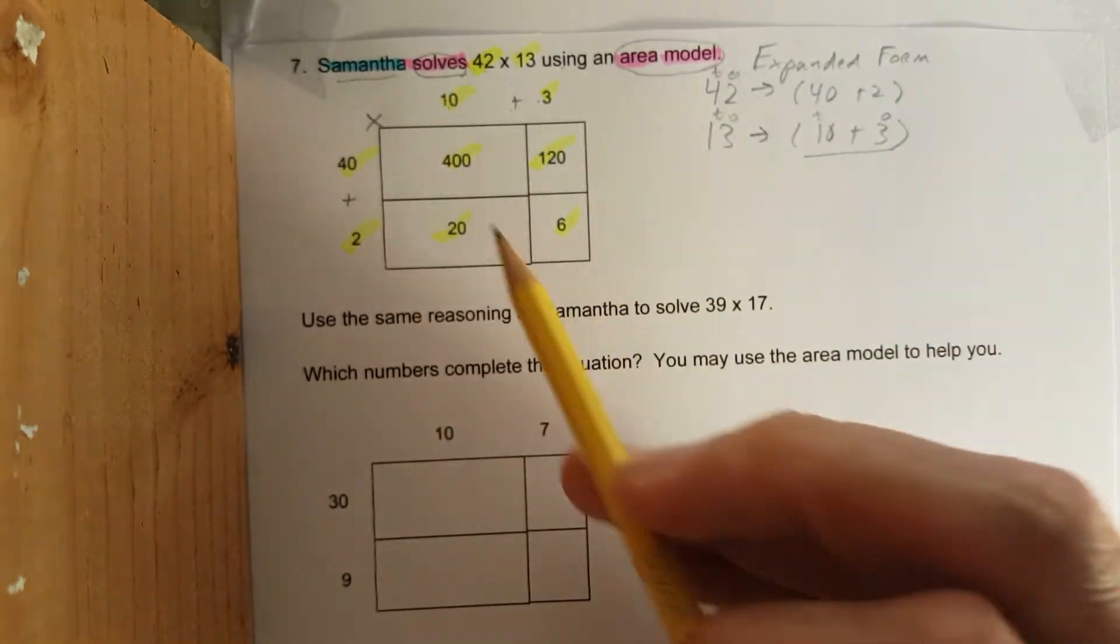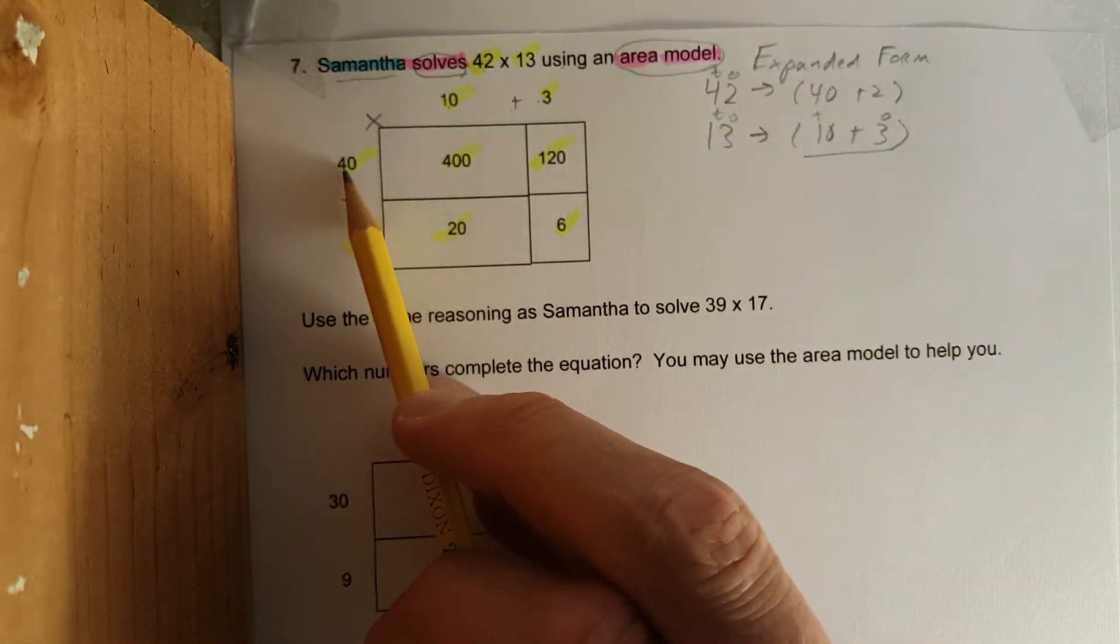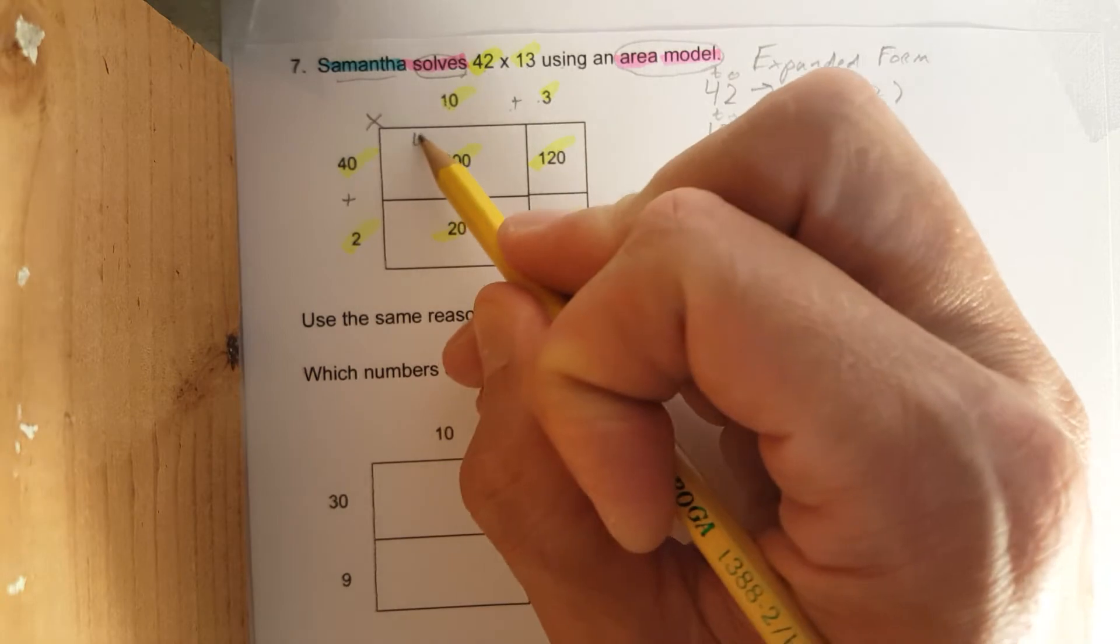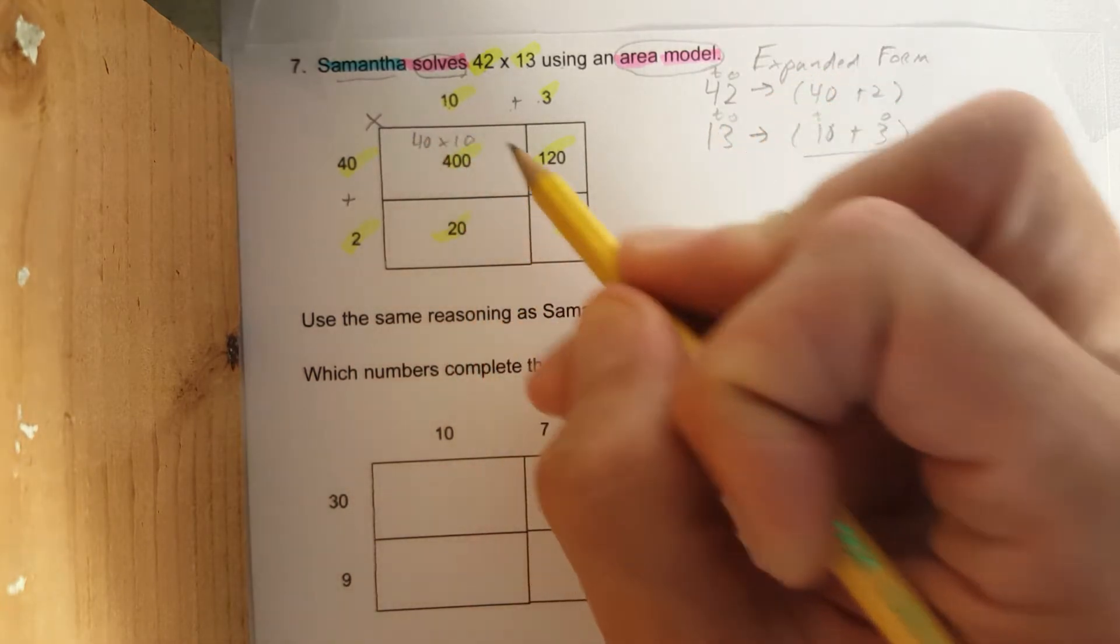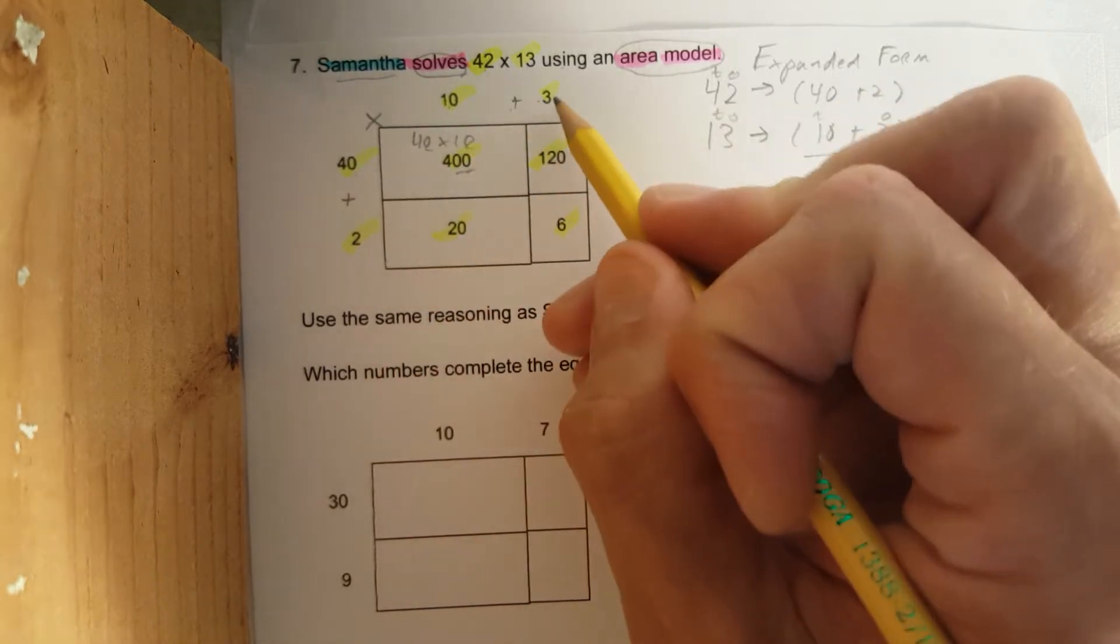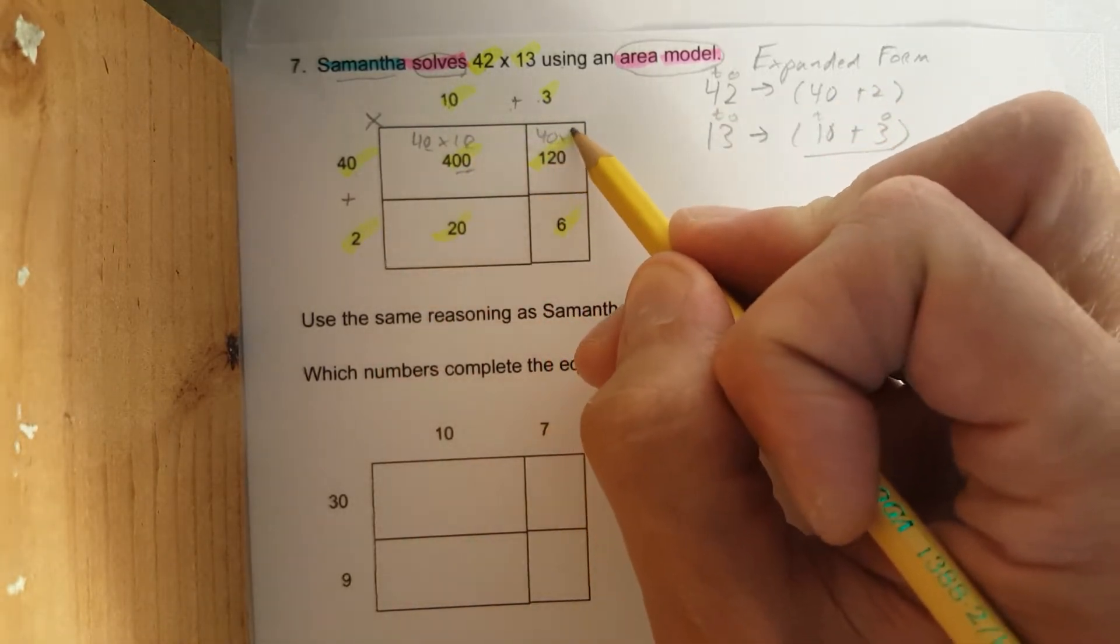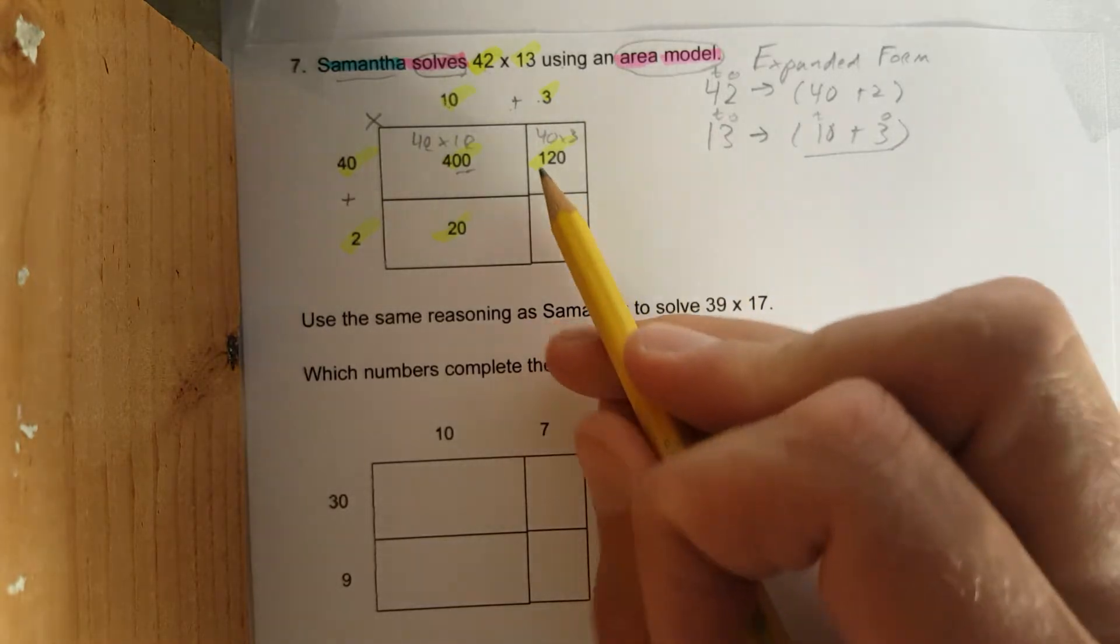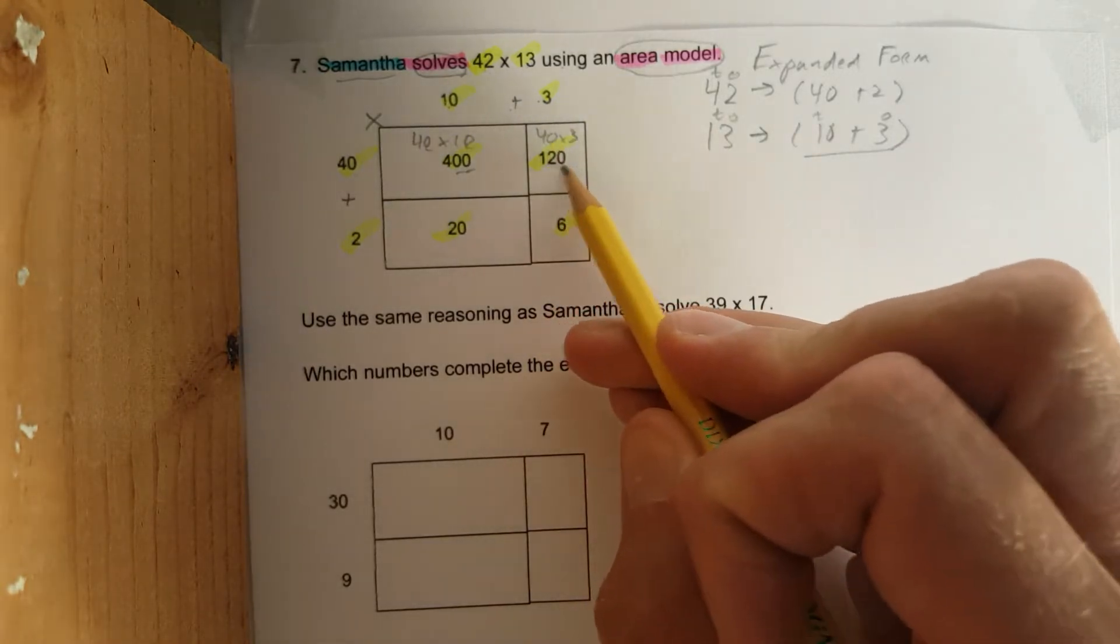Area model, we multiply it. Let's start with the tens first. 40, I'm going to write in this box, times 10 is 400. Two zeros, two zeros. 40 times 3 is this box. 4 times 3 is 12, and one zero, 120.